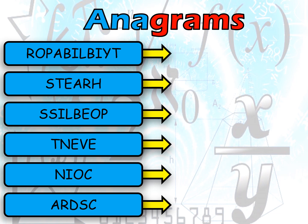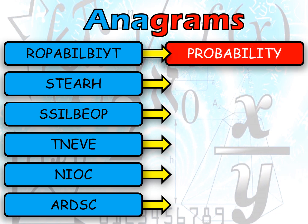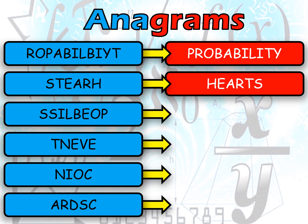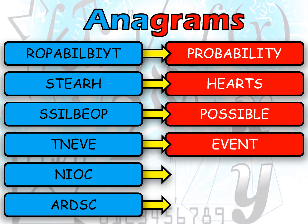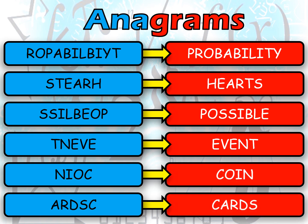Let us have some words. We need to unscramble these words. So the first word is probability. The second word is hearts. The third word is possible event. And also coin and cards. So we have probability, hearts, possible, event, coin, and cards. These are the words that we already had in our previous discussion.